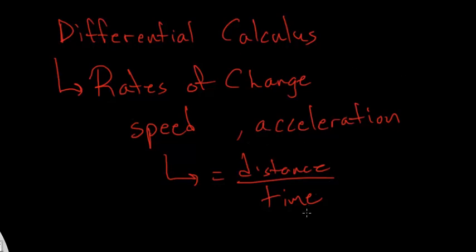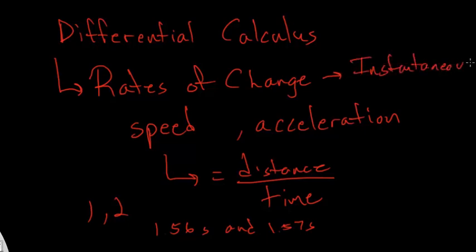In algebra, you always have to take an average over time, because you always have some finite period of time you're talking about, between 1 and 2 seconds, or between 1.56 seconds and 1.57 seconds. So you're always going to have some time range you're dealing with, but with calculus you can shrink this time range to nothing, essentially nothing. It's infinitely small, and then you'll have the instantaneous rate of change. So it's really dealing with the instantaneous change.